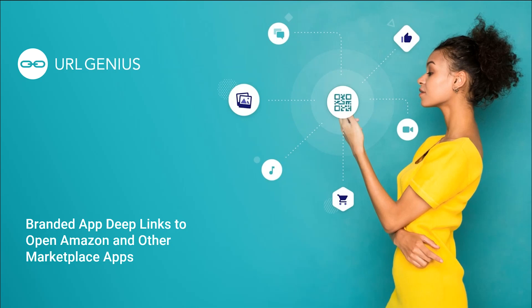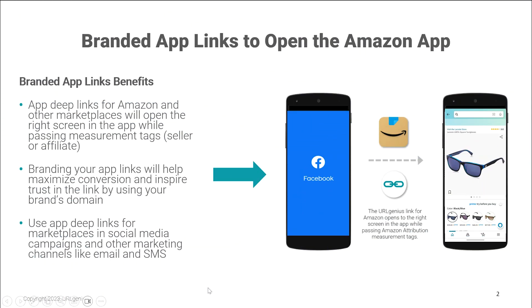Welcome to this brief video about how to create branded app deep links to open Amazon and other marketplace apps. App deep links for Amazon and other marketplaces will open the right screen in the app while passing measurement tags for sellers or affiliates. Branding your app links will help maximize conversion and inspire trust in the link by using your brand's domain. You can use app deep links in social media campaigns and other marketing channels like email and SMS.